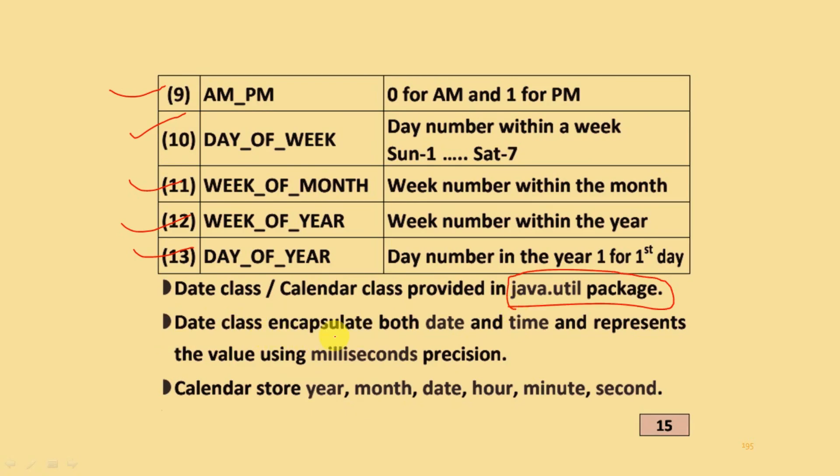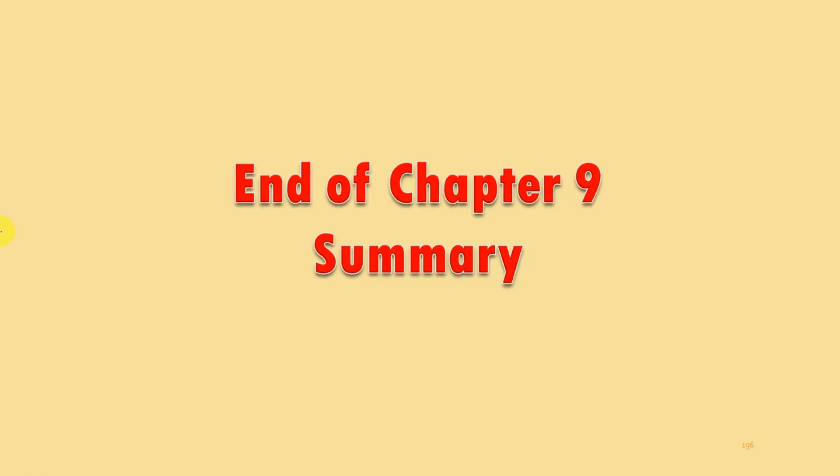Date class encapsulates both date and time and represents the value using milliseconds. Calendar stores year, month, date, hour, minute, and second. This is the end of chapter number nine summary.